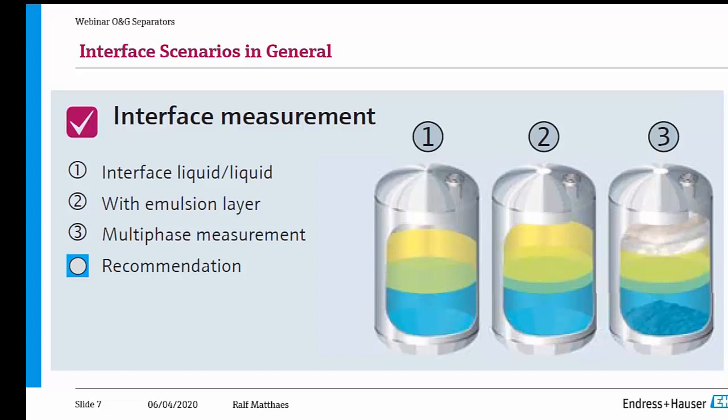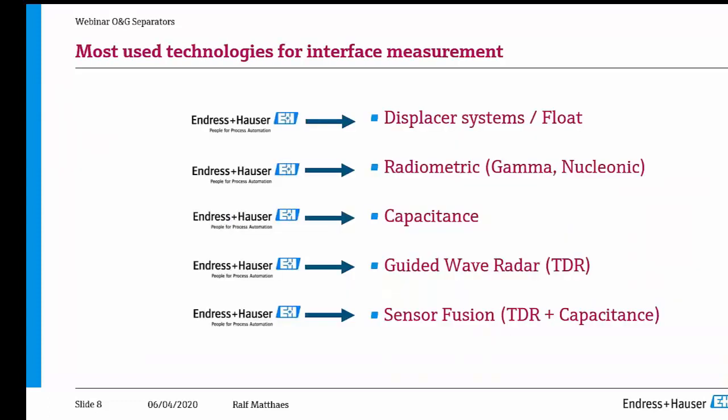From our perspective, first we look into the technologies which are available. Technologies you find on the market are for instance displacer systems or floats — very often used in huge storage tanks, achieving accuracy of better than one millimeter. For the toughest applications you find the radiometric principle. One of the oldest ones: capacitance probes. Guided wave radars are now very common, or the sensor fusion technology combining TDR guided wave radar and capacitance.